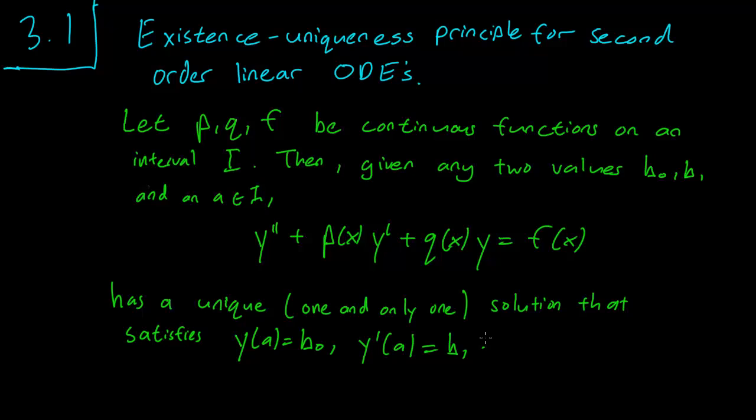So what this means is that if you have the conditions holding, if p, q, and f are all continuous in your interval, you pick a point, you pick what value you want your function to have at that point, and you pick what the slope is at that point, there will be exactly one solution that will fit that criteria. It will have that exact value for y at a and that exact slope for y at a.